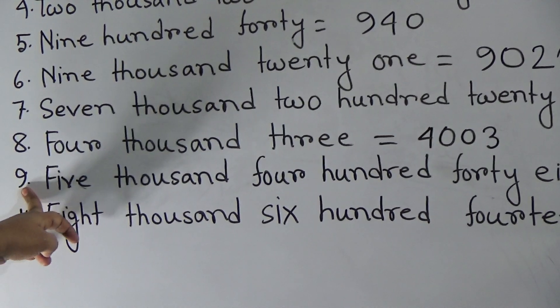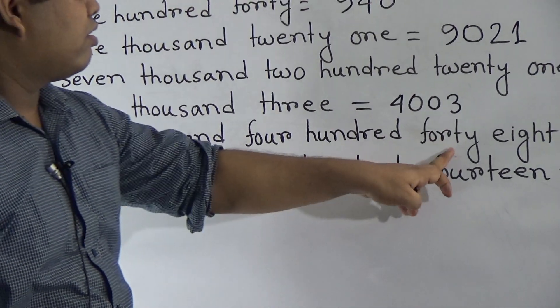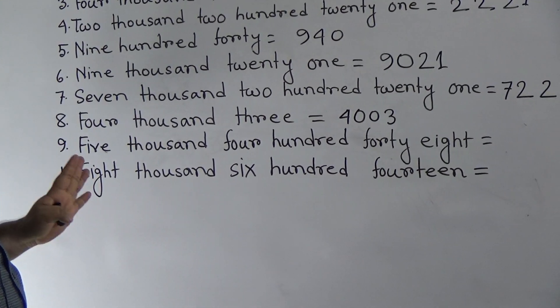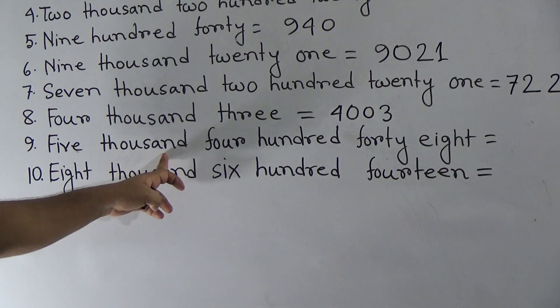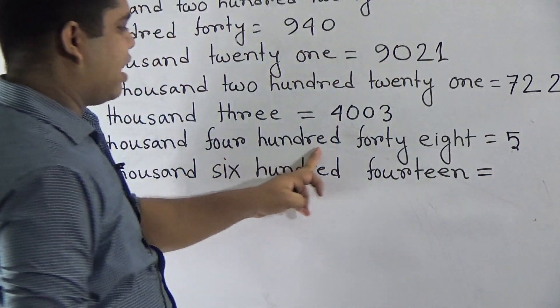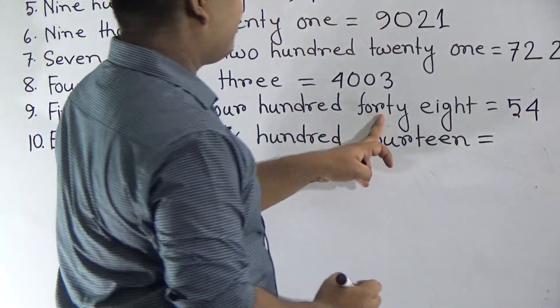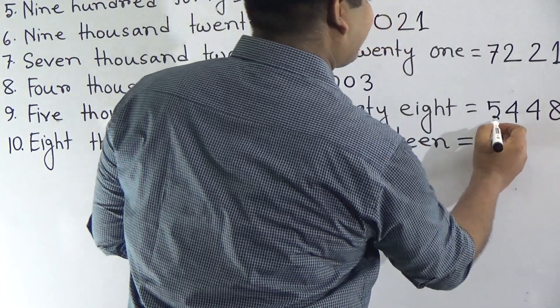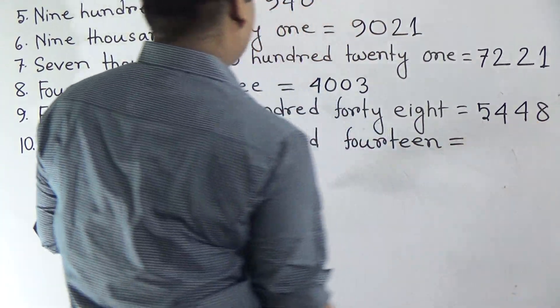Number 9, 5448. This is present here. That means, 5000. So, write 5 first. 400. So, write 4. And 48. So, write 48. And read as 5448.